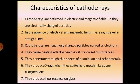Seventh, they produce fluorescence on glass. In today's class we studied that the atom is divisible and consists of three subatomic particles — electron, proton, and neutron — their charges, who discovered each one, how the discovery of the electron took place via the cathode ray discharge tube experiment, and the characteristics of cathode rays. Try to understand the concept; it will become easy to understand chemistry. Thank you.